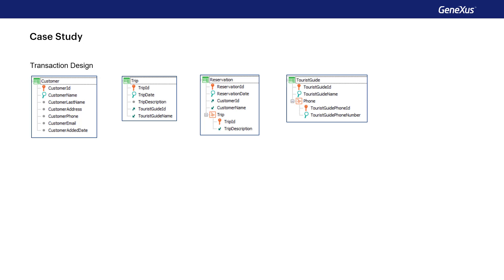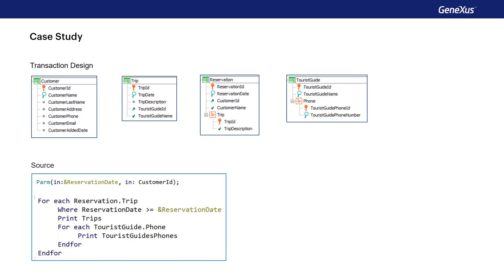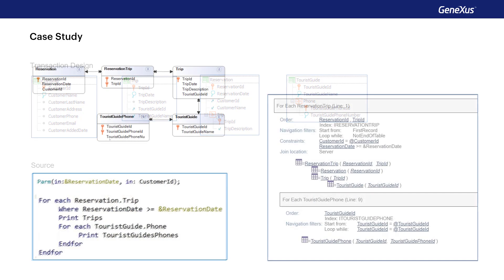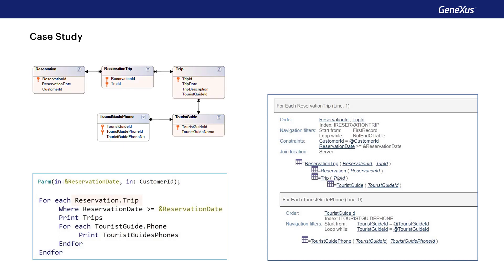And for each of them, the contact phone numbers of the tour guide in charge. To achieve this, the source shown is proposed. Knowing that the base table of the external foreach command is reservation trip, and that the base table of the internal foreach command is tourist guide phones, does it establish implicit filters for the information it'll use? Yes, it'll show the phones of each tour guide. Because GeneXus looks for a relationship between the extended table of the external foreach command and the base table of the nested foreach command. It's another way of looking for a one-to-N relationship, although in this case it's an indirect one. If each reservation trip has a tourist guide ID, and in the table to be navigated there's also a tourist guide ID, then GeneXus understands that due to the relationship between the information, it'll be the same. And that's why it'll make a join.